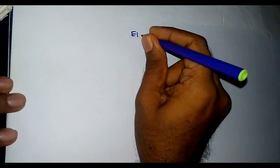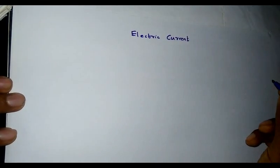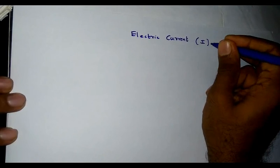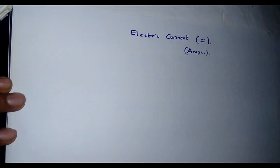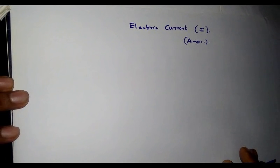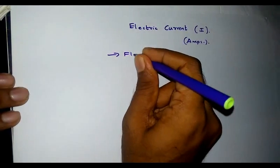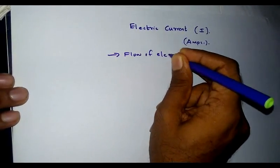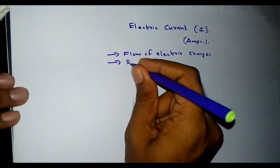Good evening. Today we are discussing electric current. Electric current is represented by the symbol I, and its unit is ampere. Electric current can be simply defined as the flow of electric charges, or the rate of flow of electric charges.